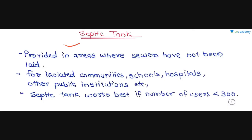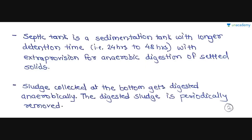Septic tanks are generally provided in areas where sewers have not been laid — areas where a sewer system is not available. Septic tanks are also provided for isolated communities, schools, hospitals and other public institutions. Septic tanks work best if the number of users is less than 300. They can work for more than 300 users, but they work best below that threshold.